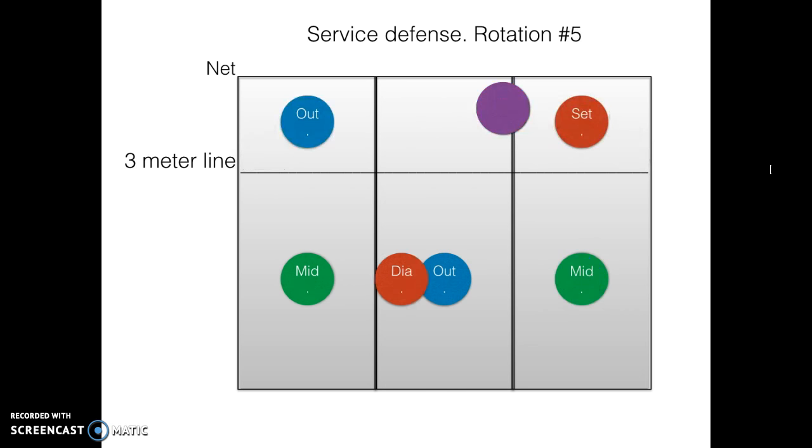Alright, so rotation five. It's an easy one as well. Just like this, the setter is already at setting position and the middle and outside move to the left so that the outside can attack.